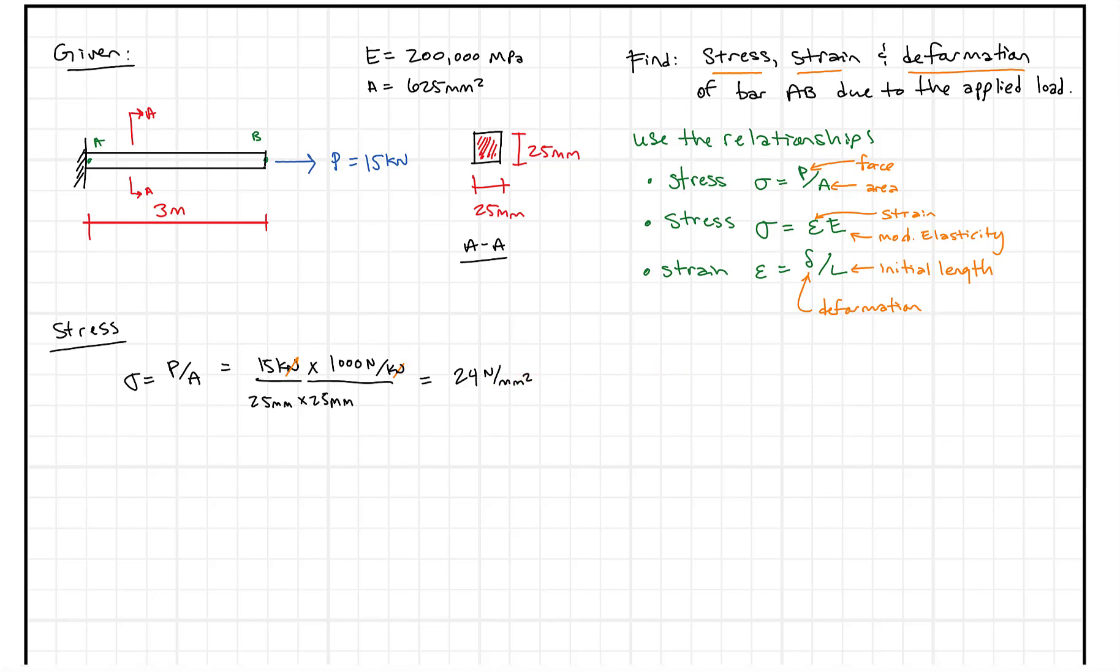And we know that one newton per millimeter squared equals one megapascal. So anytime we're doing stress, I like to get my units, especially in metric, into megapascals. So we'll keep coming here and we'll just say this equals 24 megapascals. So that's our stress in the bar. So check, we got box one.